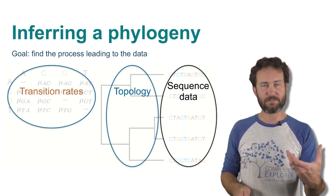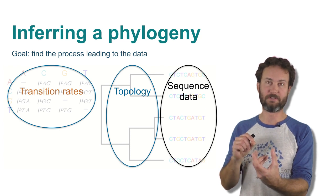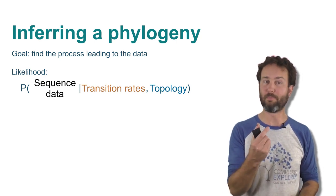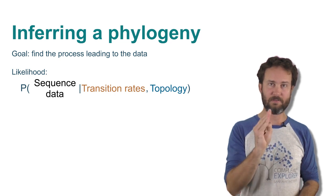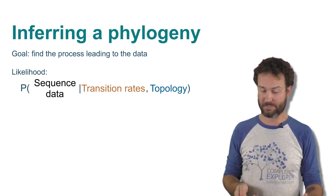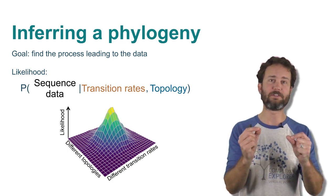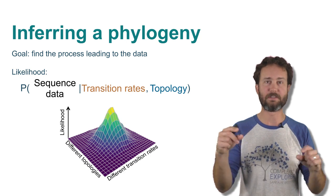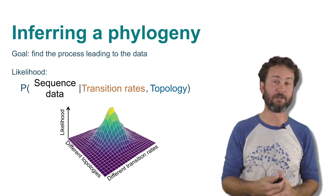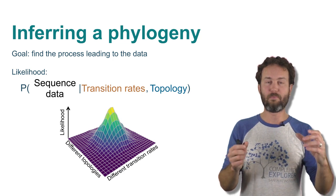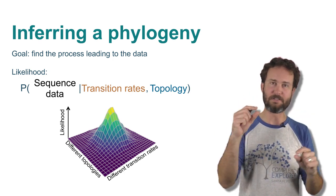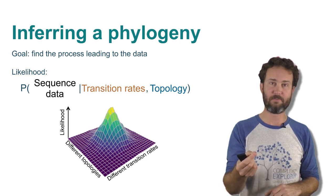So we have transition rates, we have a topology — which is the connections of the phylogeny — and then we have the sequence data. What we can do is write a mathematical expression for the probability of the sequence data conditional on the transition rates and the topology. This conditional probability is called the likelihood. Our goal in statistical inference is to find the combinations of transition rates and topologies that maximize this likelihood. This procedure is called maximum likelihood inference, and once we've found the specific transition matrix and topology that maximizes the likelihood, that gives us our estimate of the phylogeny.